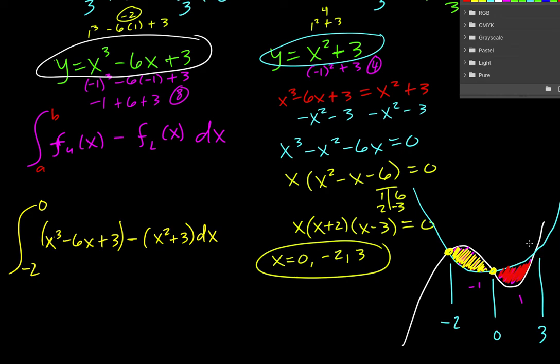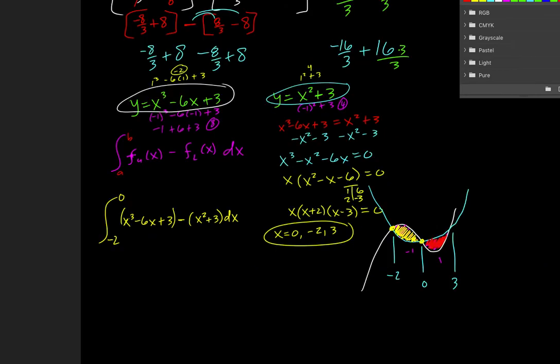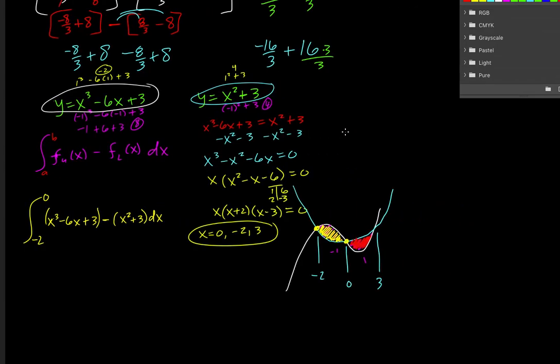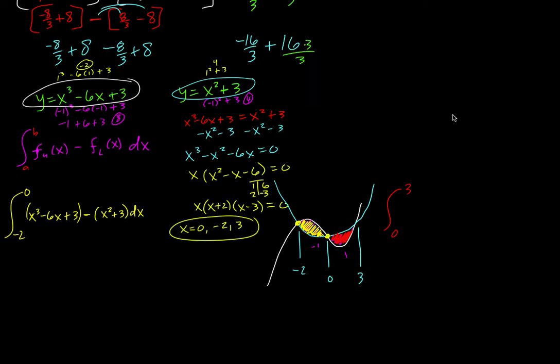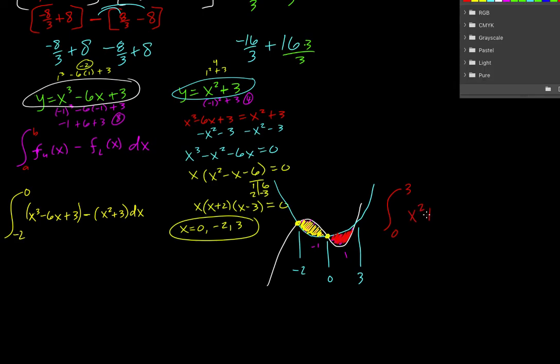Now in red I'm going to write that piece of the area. I'm going to zoom out. I'm going to write it over here. So we're going to go from 0 to 3. So we're going to add those areas together. So we go from 0 to 3. And this time the upper is the blue function. So it's x squared plus 3. And minus the other function, x cubed minus 6x plus 3 dx.